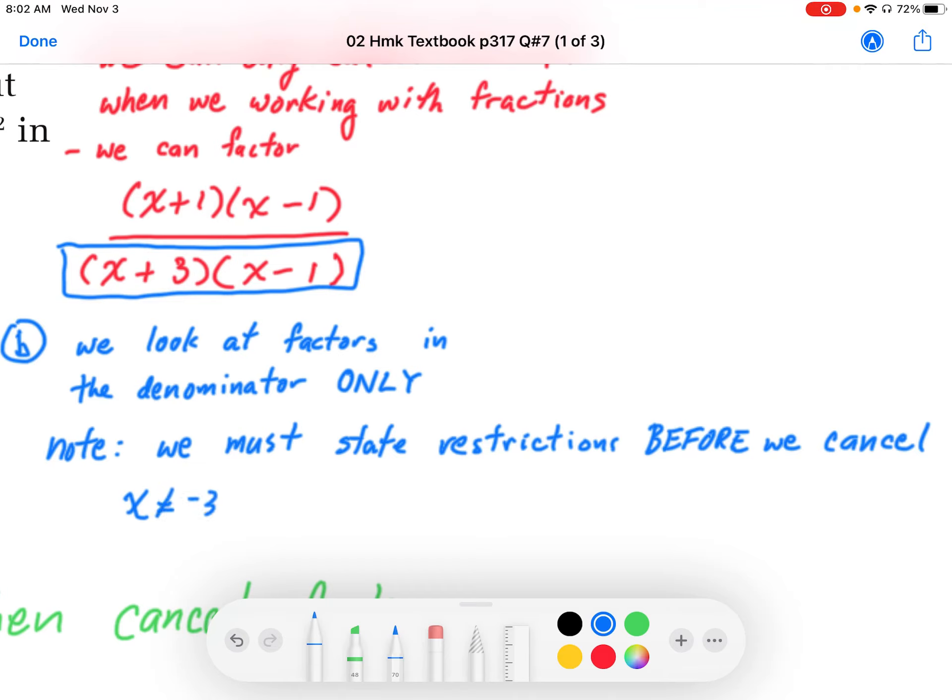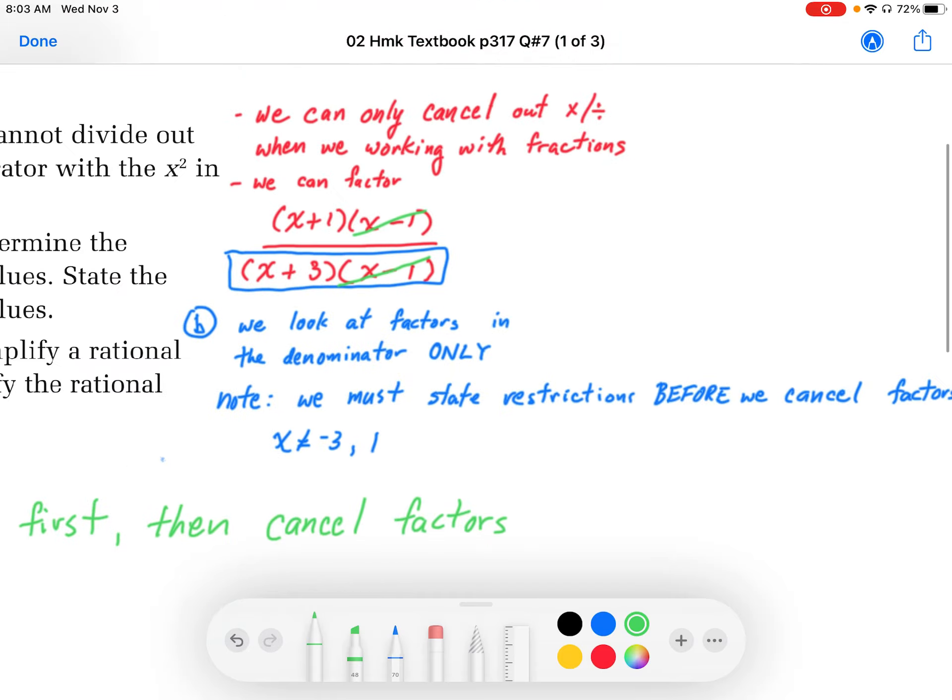So x cannot be negative 3, because if we plug negative 3 into the first bracket, we get 0. And it cannot be positive 1 as well. Now, once we have stated the restrictions, now we can cancel out these factors. Okay, so these factors now can cancel out. That restriction remains, though, because that now represents a hole in the graph.